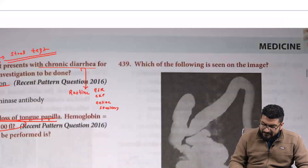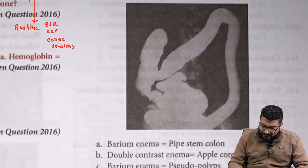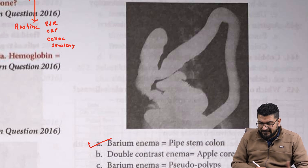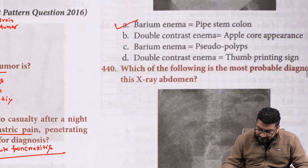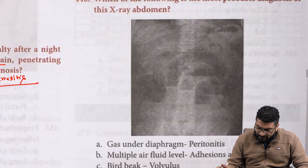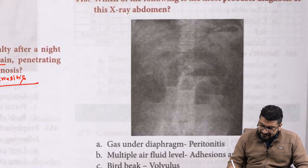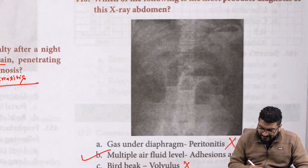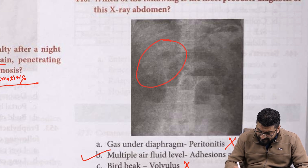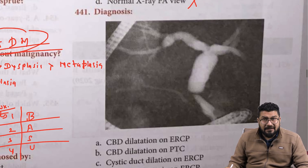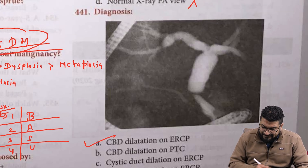Moving to next: following is seen in an image — this is what we call pipe stem colon, seen on barium enema. It is an image-based question that can be asked in exams. For the X-ray abdomen, we can see multiple air-fluid levels — you can see adhesion and band. No gas under diaphragm, so bird beak volvulus is not the case. There is also an image showing CBD dilatation on ERCP.